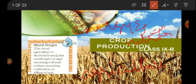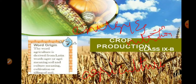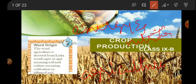Every living organism needs energy for its survival, and that energy comes from the nutrients in food. The branch of science dealing with the growth of plants and animals for human use — since humans eat both plant and animal food — is called agriculture. Agriculture is the world's most important industry even today, because every living organism needs food.